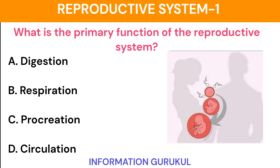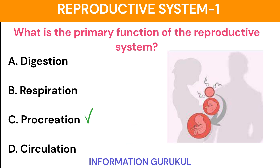What is the primary function of the reproductive system? Procreation.